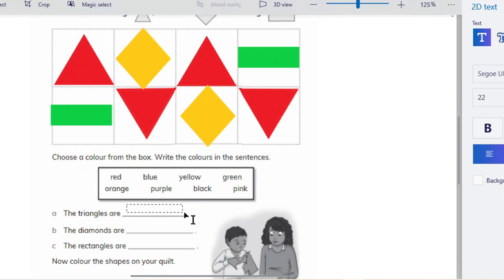I will write here red. Okay, because my triangle is red in color.